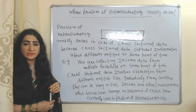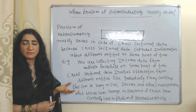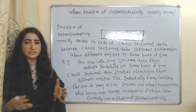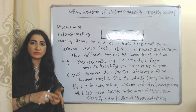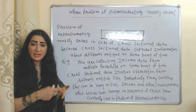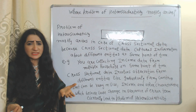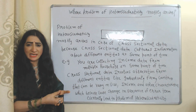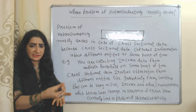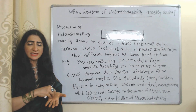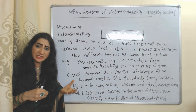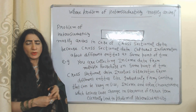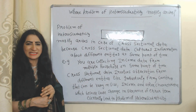Cross-sectional data involves observations about multiple entities — for example, information about firms, individuals, and countries. Obviously, this information can vary in terms of size, income, and other characteristics, and these variations can change the variance of the error term, eventually creating the problem of heteroskedasticity.